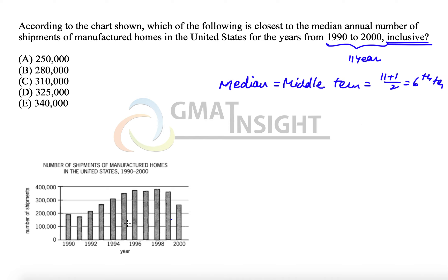So let's quickly see what the sixth bar is. The smallest bar is 1991 — that's the first. The second smallest is 1990, the third is 1992. The fourth bar is either 1993 or 2000 — they look almost equal, so I'm marking 1993 as fourth and 2000 as fifth. The sixth bar is therefore 1994.